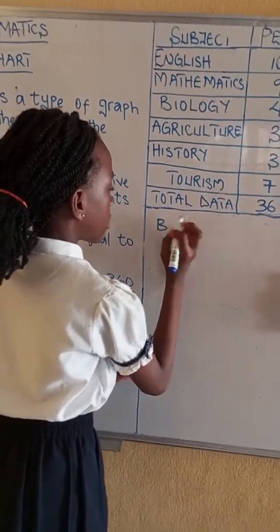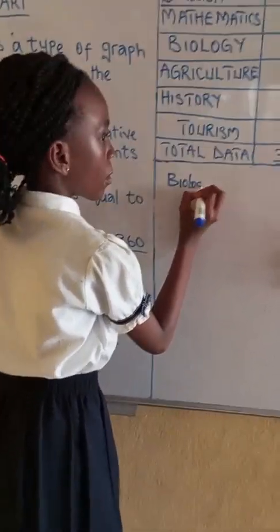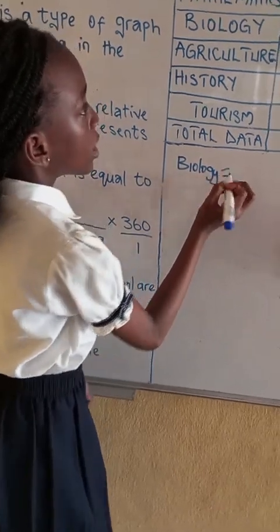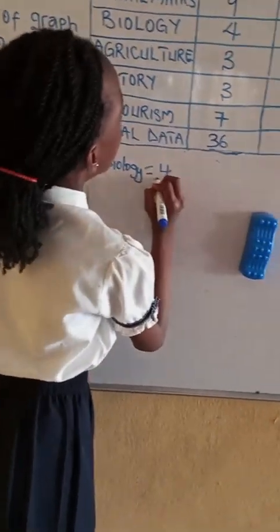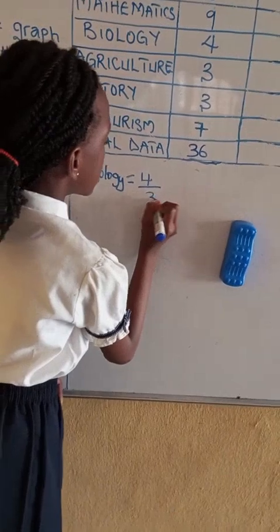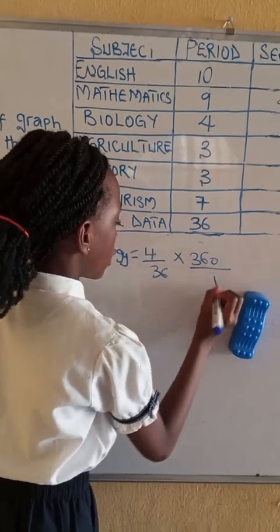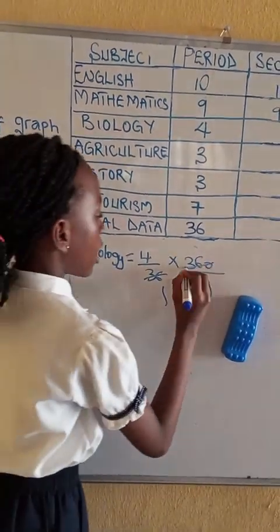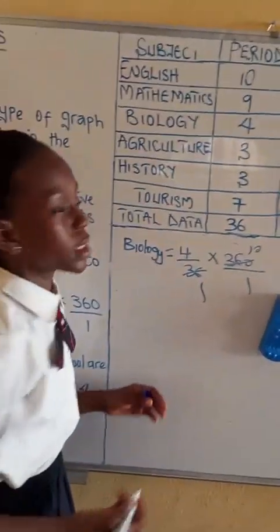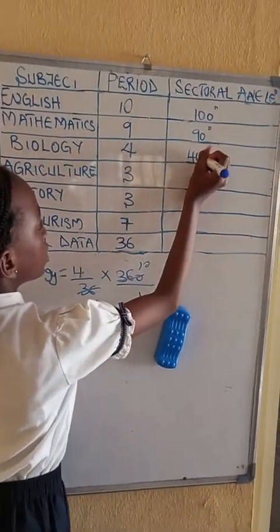Biology equals to 4 over 36 times 360 over 1. 36 times 1 and 10. So 4 times 10 is 40 degrees.